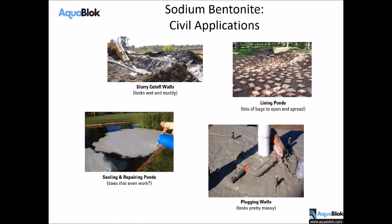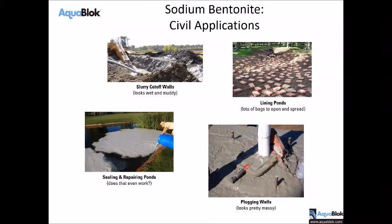In its raw powdered form, since bentonite swells and absorbs water and becomes pasty, it can be used for a lot of civil applications — slurry cutoff walls, although it's very messy to install, and lining ponds. It comes in bag format most of the time, and it can be a pain to install over a large pond area — a big mess. There's even a photo showing someone trying to dump it into a pond to get the bentonite to sink to the bottom and seal — and that's not going to work.